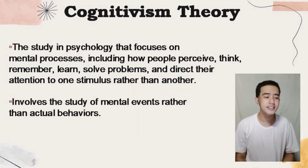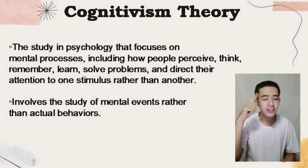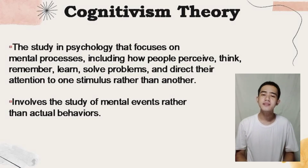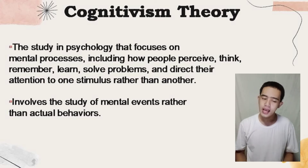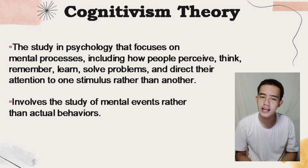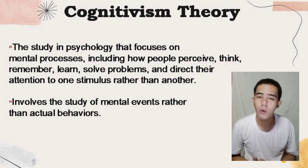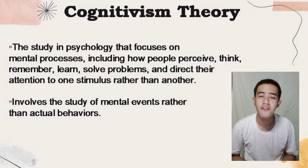And now, let us proceed to Cognitivism Theory. Cognitivism is the study in psychology that focuses on mental processes, including how people perceive, think, remember, learn, solve problems, and direct their attention to one stimulus rather than another. It also involves the study of mental events rather than actual behaviors. These mental events are concerned with acquiring, processing, storing, and retrieving information. Cognitivism is the study of cognition that emphasizes the role of mental structure or organization. It is a learning theory according to which mental processes mediate learning, and learning entails the construction or reshaping of mental schemata.